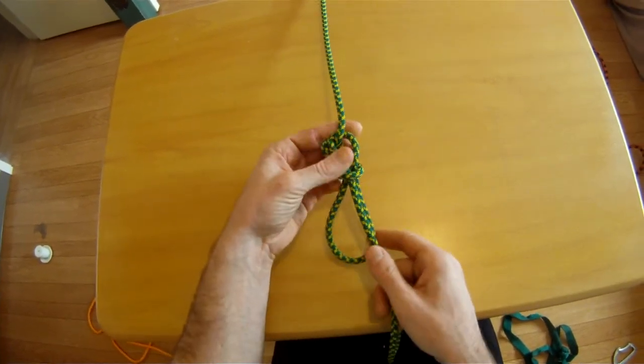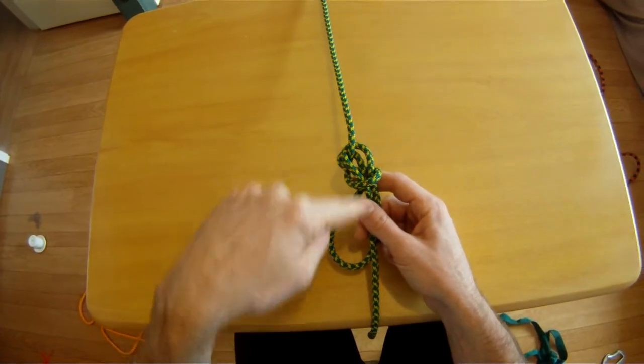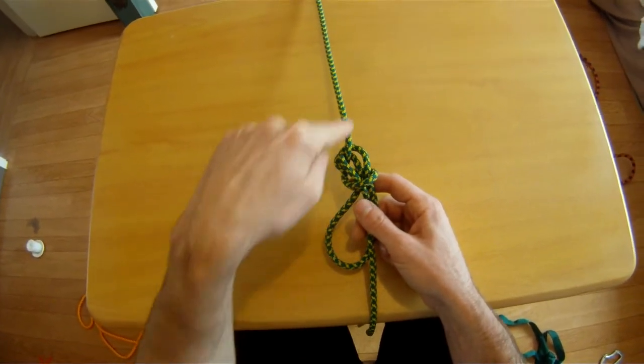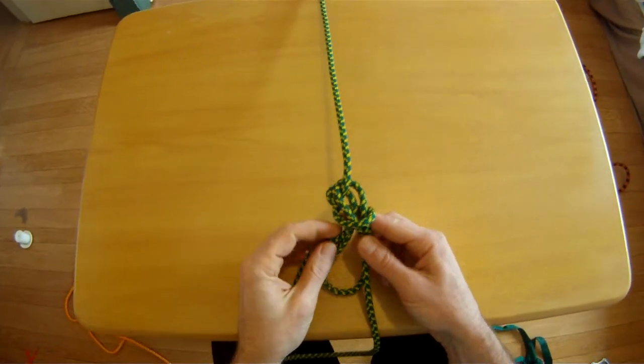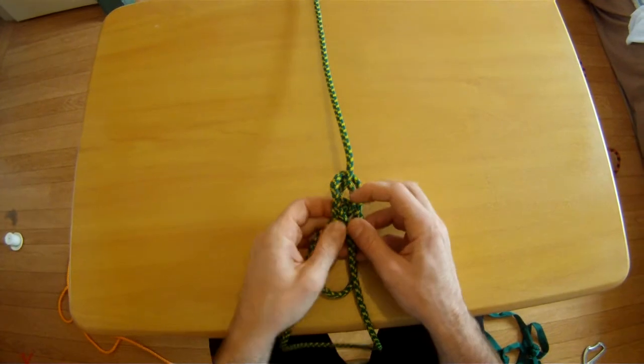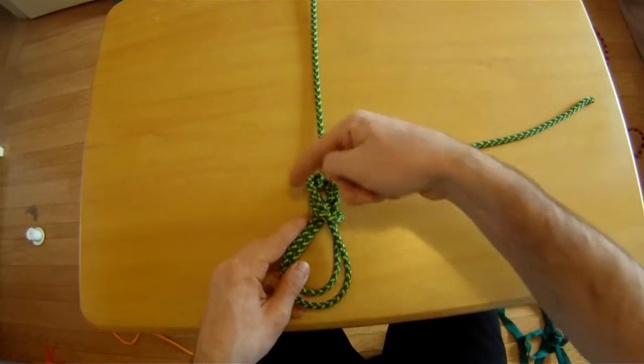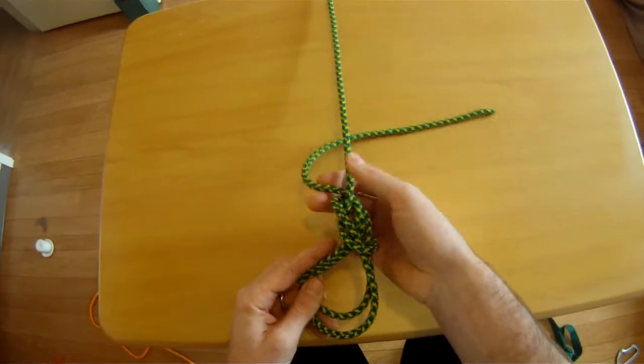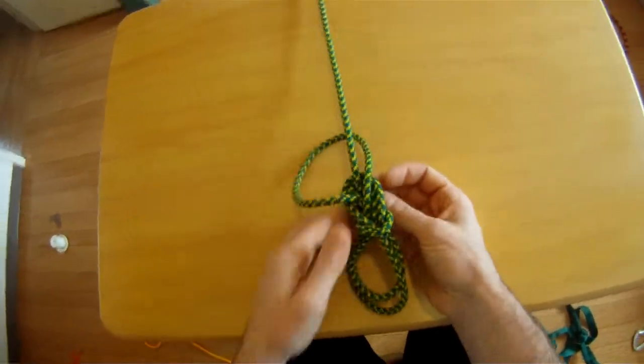Then, we follow the rope back, and now on this step we will retrace the original figure eight. Now, we are retracing the original figure eight. So, following the original single figure eight, back around, through, and follow every bend.